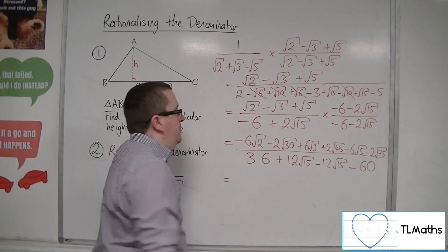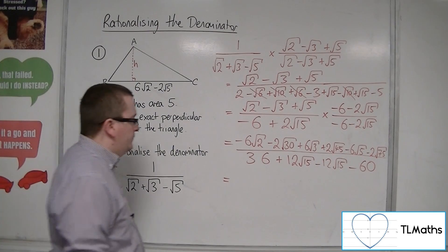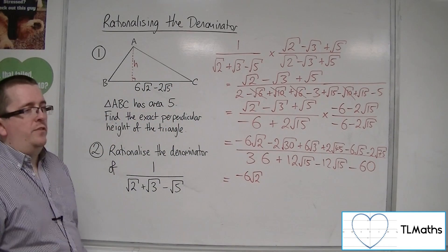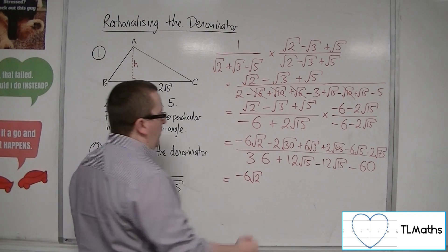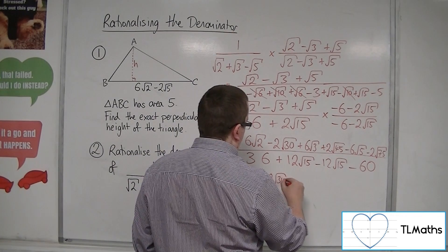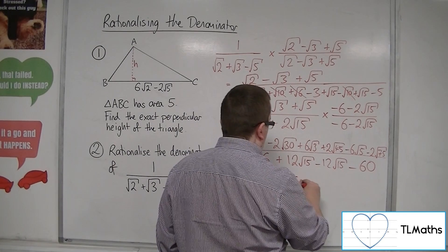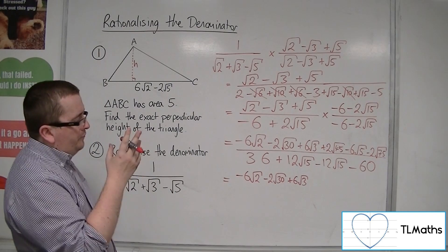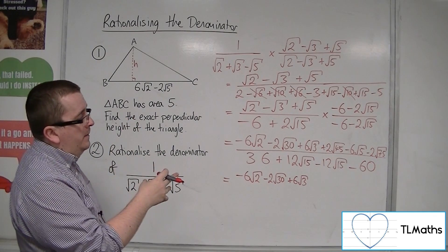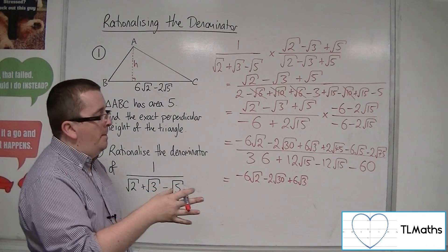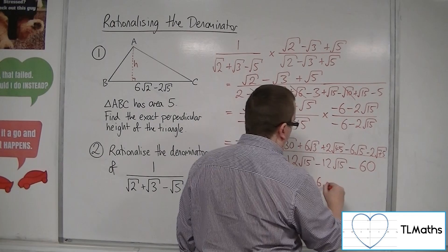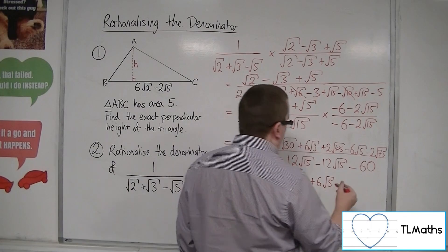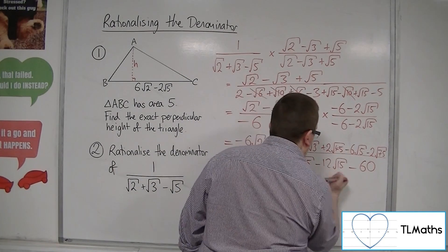So, we have minus 6 root 2. Minus 2 root 30. Root 30 can't be simplified, so we'll leave that one alone. We've got 6 root 3. That can't be simplified. 2 root 45. Now, root 45, 9 goes into it 5 times. So, that's 3 root 5. So, that's 6 root 5. Minus 6 root 5. So they're going to cancel. So we can get rid of those.